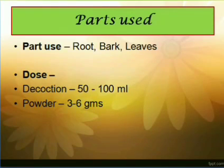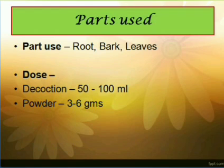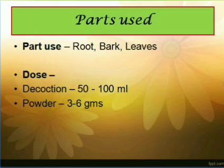The parts used are the root, bark and the leaves, used ethno-medicinally. The decoction of the root or bark is indicated in a dose of about 50 to 100 ml. The root, bark or leaves in powder form are to be used in a dose of about 3 to 6 grams.